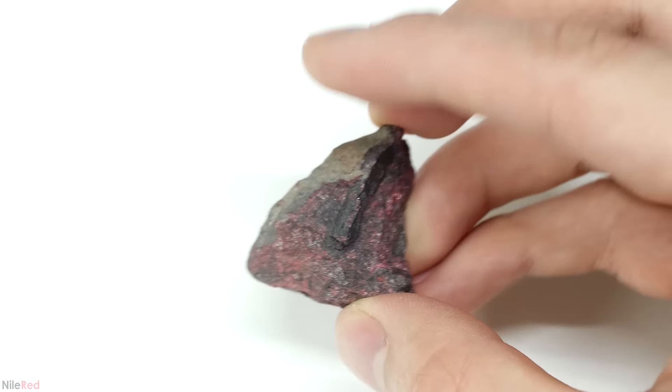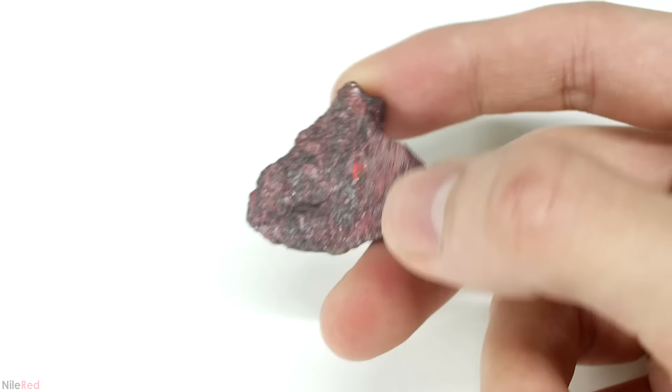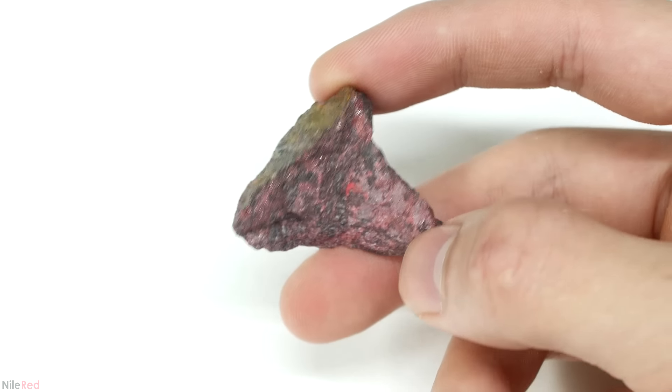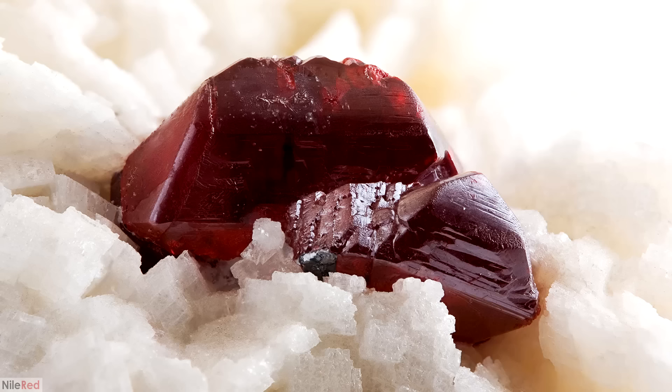Here we have the alpha form, which is the most common one. It has a really strong red color, so when it's in a rock like this one, it's usually pretty easy to spot. It depends on the conditions, but it can sometimes also form these very nice crystals.